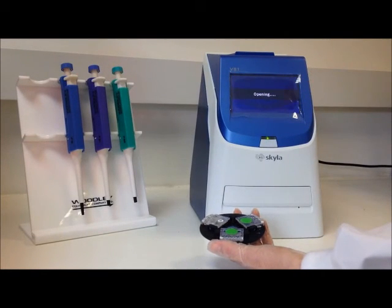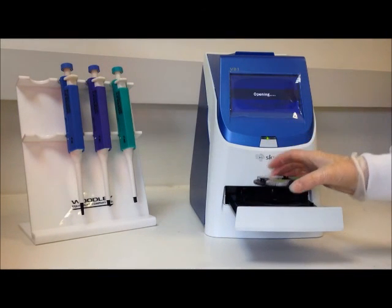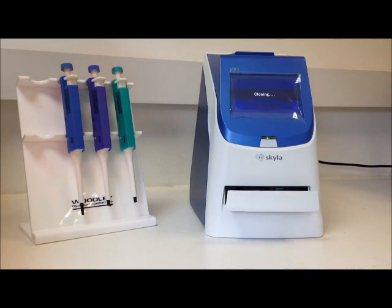Press start on the VB1 analyzer to open the drawer. Hold the carrier level and place in the drawer. Press OK and enter any necessary patient or sample information.